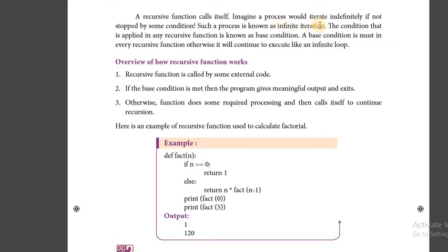A loop that continues without a condition is called infinite iteration. If it satisfies the base condition, it will come out of the loop; otherwise it will rotate again and again. If a condition is not specified, it becomes an infinite loop. The factorial program is given as an example for recursive function.